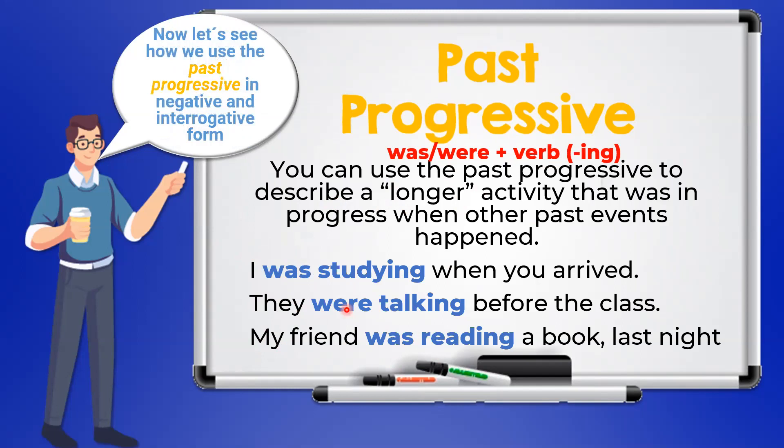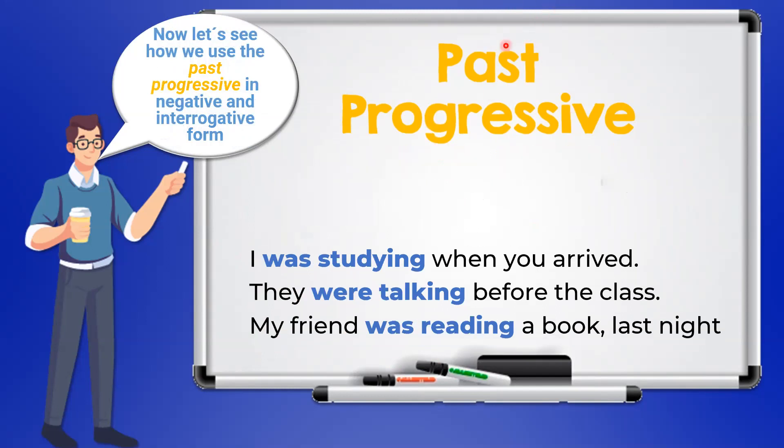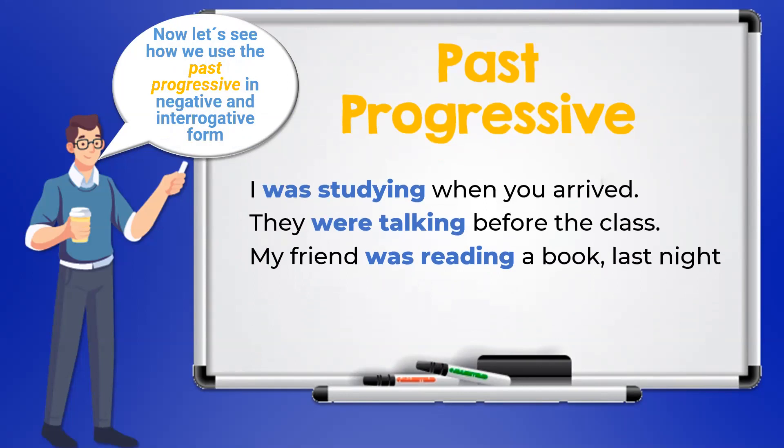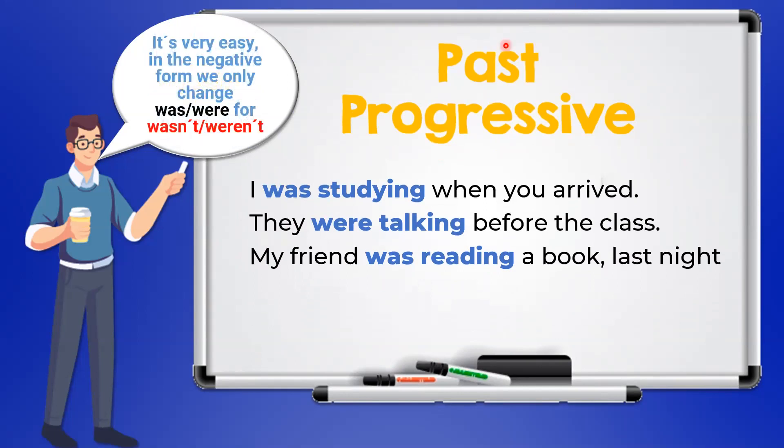Now let's see how we use the past progressive in the negative and interrogative form. It's very easy. In the negative form, we only need to change was or were to wasn't or weren't. For example...